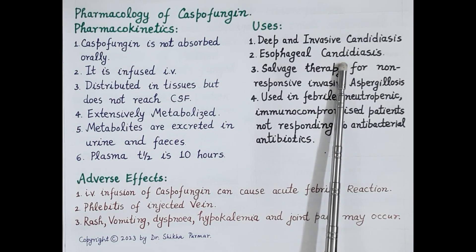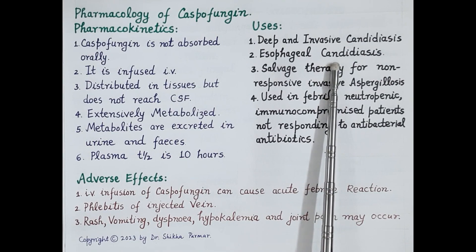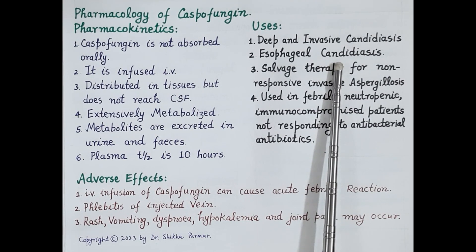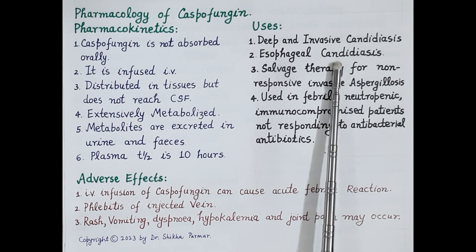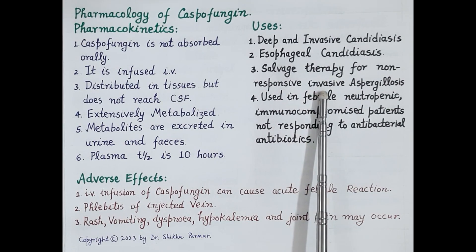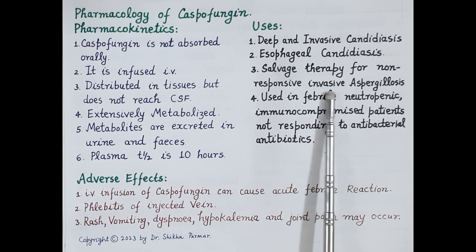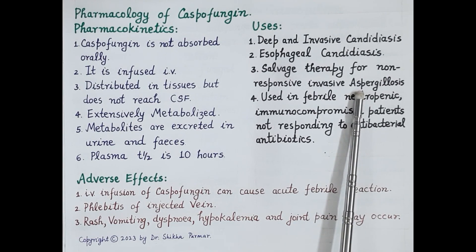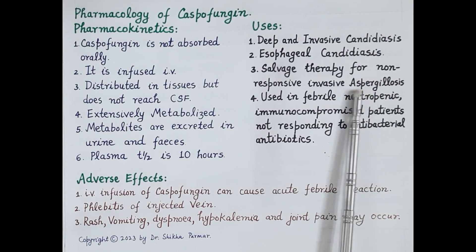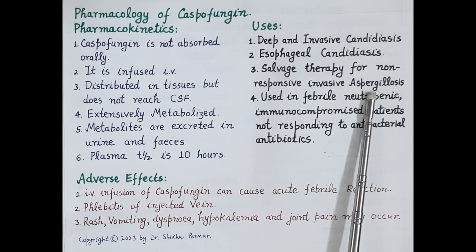For esophageal candidiasis, the drug of choice is fluconazole, and the response of caspofungin is comparable to fluconazole. Importantly, caspofungin is also effective against candidal infections that are resistant to triazoles such as fluconazole. It is also used as salvage therapy for non-responsive invasive aspergillosis — the drug of choice for invasive aspergillosis is voriconazole, so caspofungin is used when aspergillosis does not respond to voriconazole.